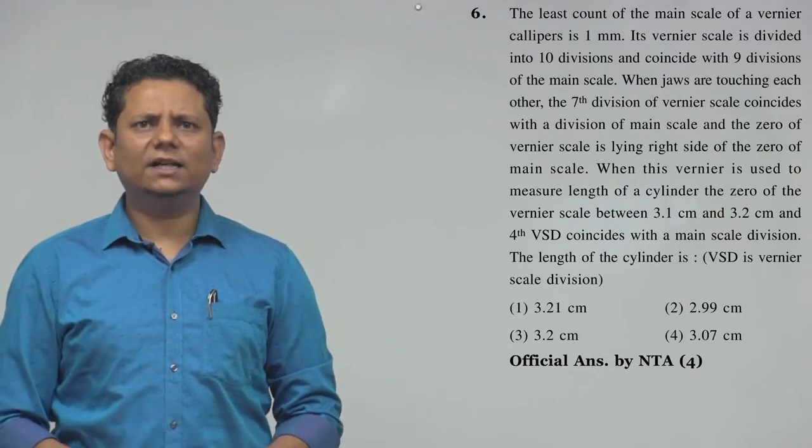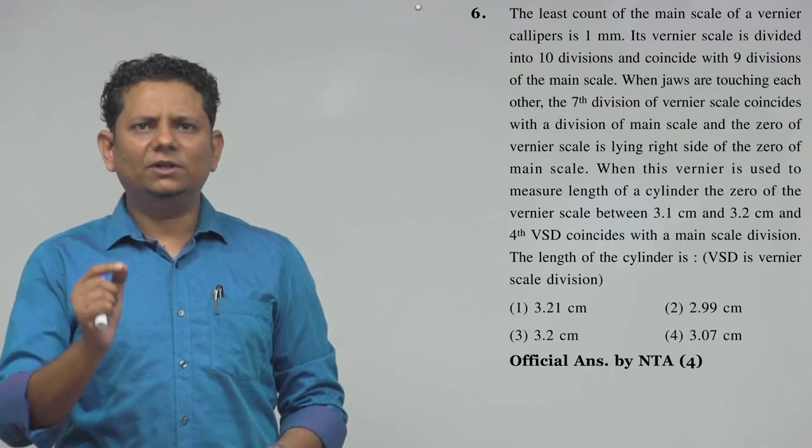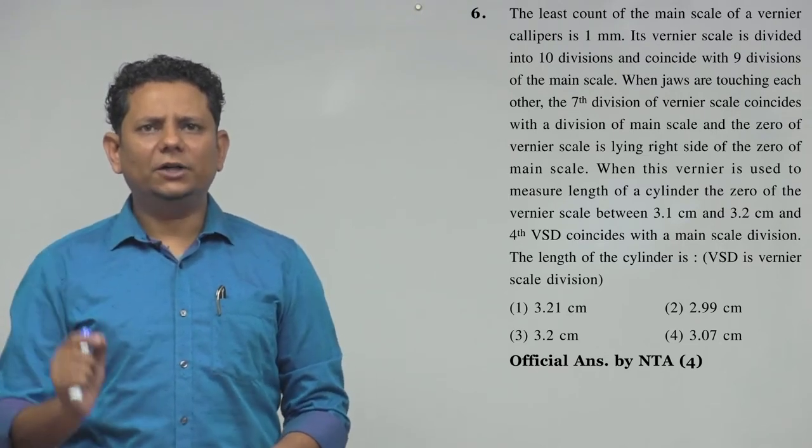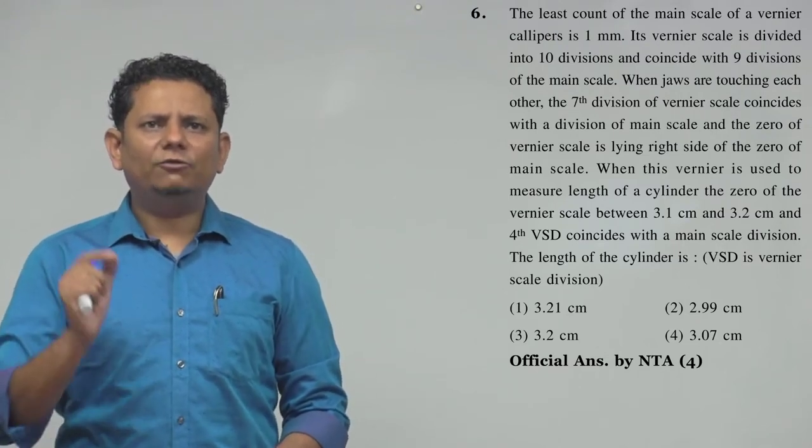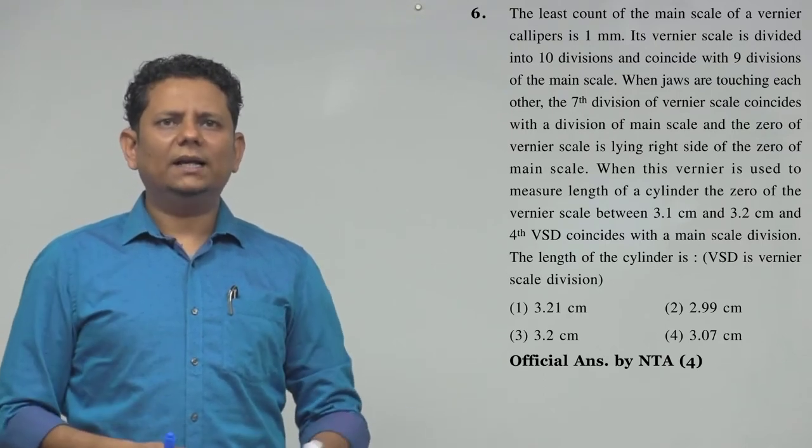When this vernier scale is used to measure length of a cylinder, the zero of the vernier scale is between 3.1 and 3.2 centimeter and the fourth VSD coincides with the main scale division.